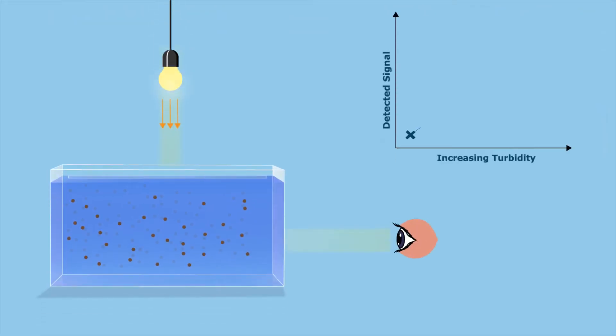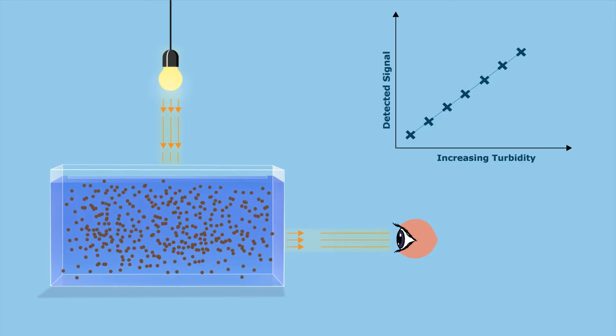Turbidity is measured by shining a constant light into water containing turbidity. Light is scattered through 90 degrees and measured by a detector. The size of the signal is proportional to the turbidity.